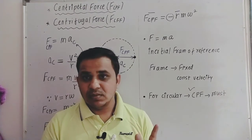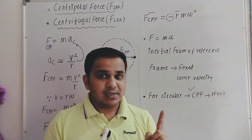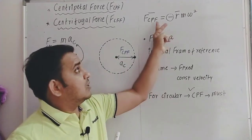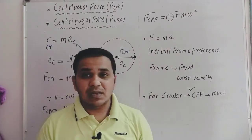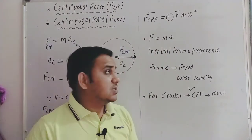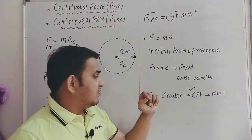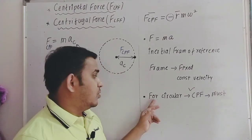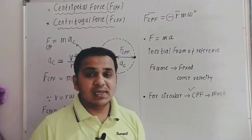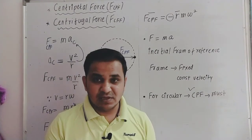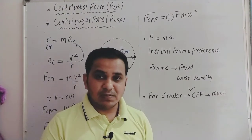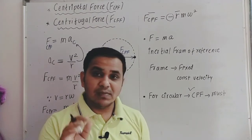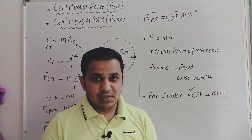So these are the four points to explain centripetal force: first, it acts along the radius directed towards the center; second, its magnitude Fcp = −r̄·m·ω²; third, it arises in the inertial frame of reference; and fourth, for circular motion it is a must — a necessary force. You can also give examples. Notes are available in the description to download and read after this video.